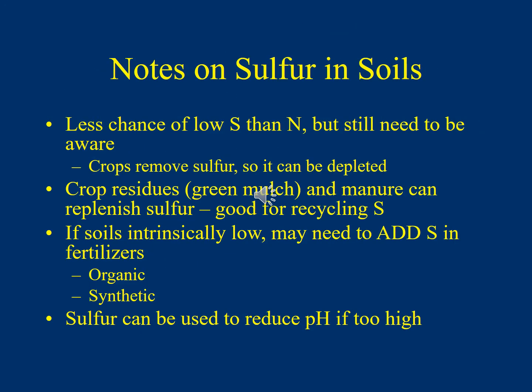Sulfur isn't as much of a concern as nitrogen from a fertilizer standpoint — there's less chance of having a low-sulfur soil since sulfur persists longer. However, crops remove sulfur and it can become depleted; green mulching and manure can replenish it. Sulfur powder can also be added to reduce soil pH if it's too alkaline. If soils are habitually low in sulfur, you may need to add organic or synthetic sulfur fertilizer to balance them out.